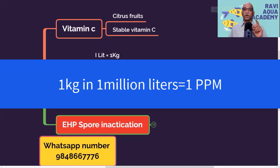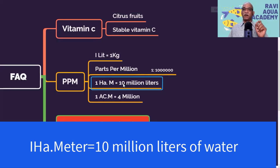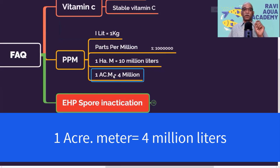One hectare with 1 meter water depth contains 10 million liters of water, so you have to apply 10 kg to achieve 1 ppm. For 1 acre with 1 meter water depth, there are 4 million liters of water, so you have to apply 4 kg to get 1 ppm. That is why we apply 4 kg for a 1-acre pond at 1 meter depth.